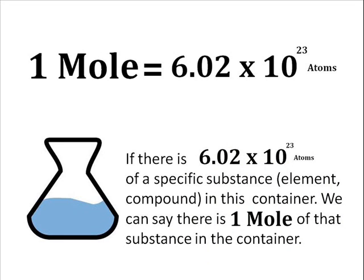One mole is just equivalent to 6.02 times 10 to the 23 atoms. So if we look at this cartoon container here, we can say that if there is 6.02 times 10 to the 23 atoms of a specific substance, for example an element or a compound, in this container, we can say that there is one mole of that substance in the container.